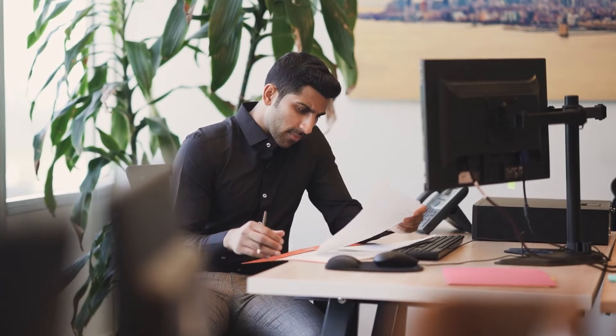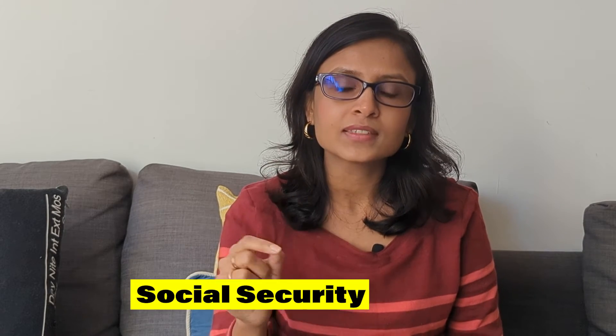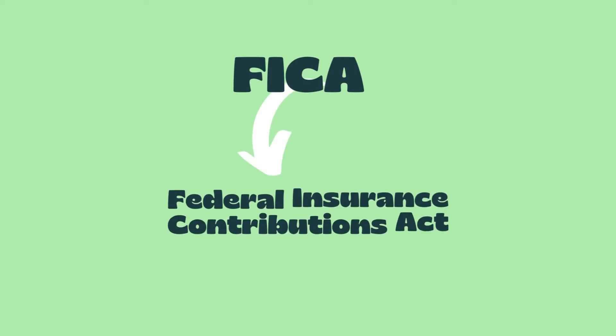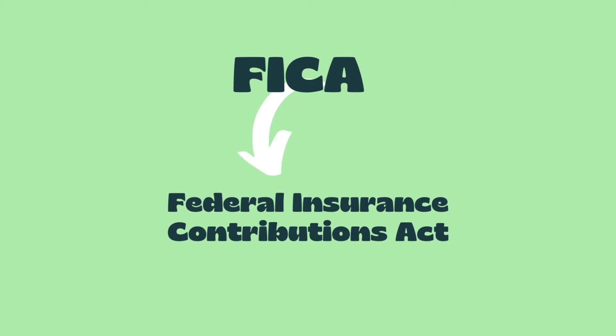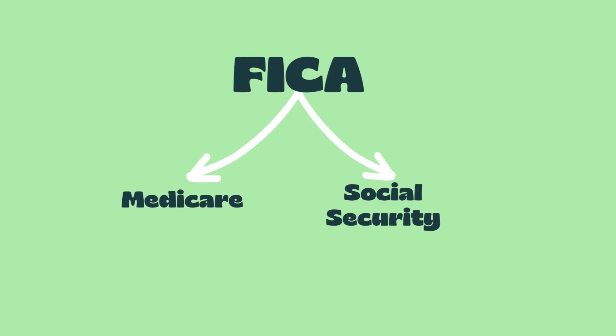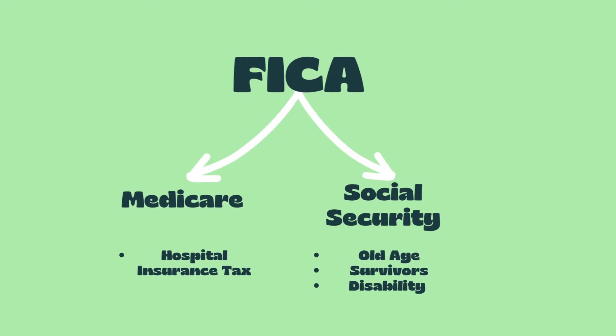So let's understand what is a FICA tax. If you have worked in the US and you look at your salary slip, you will notice that there are social security taxes and Medicare taxes being deducted. These are called FICA taxes — Federal Insurance Contributions Act — and it is basically comprised of two things: Medicare, which is your hospital insurance tax, and Social Security, which is basically for old age survivors or anyone with a disability.